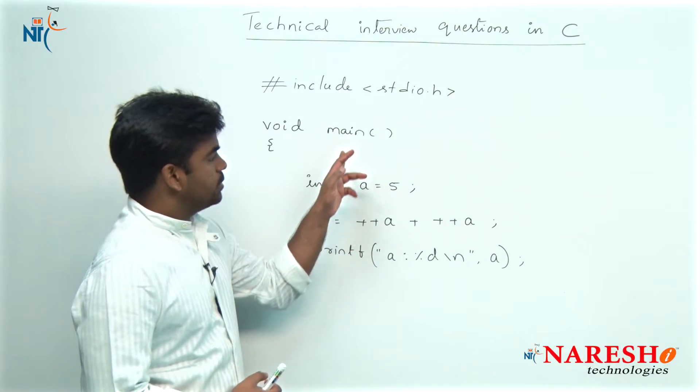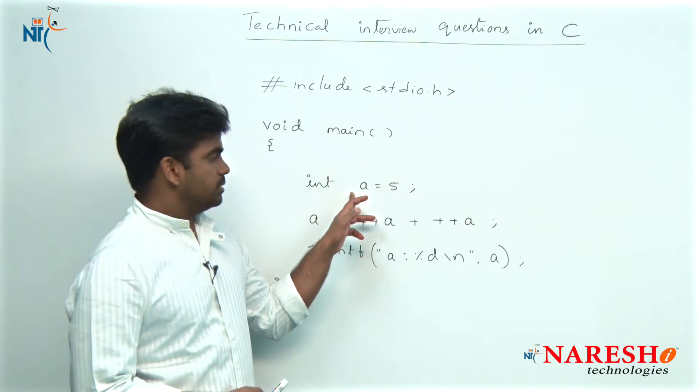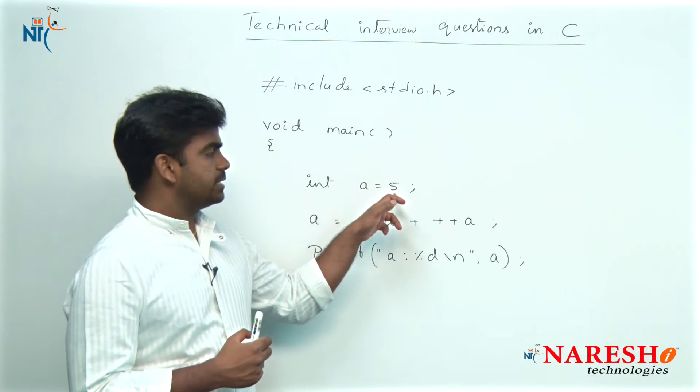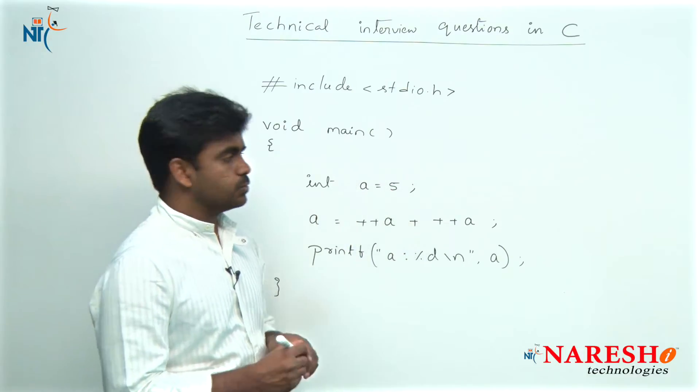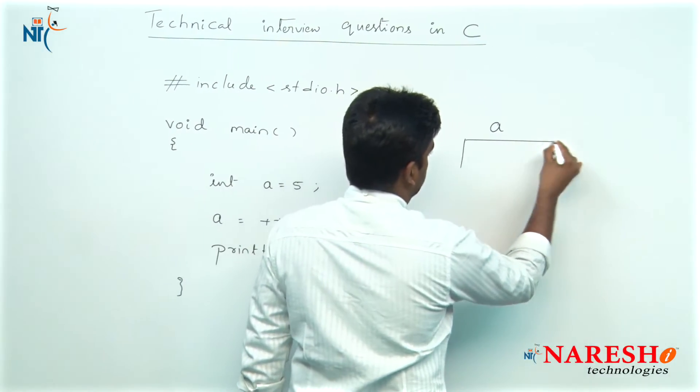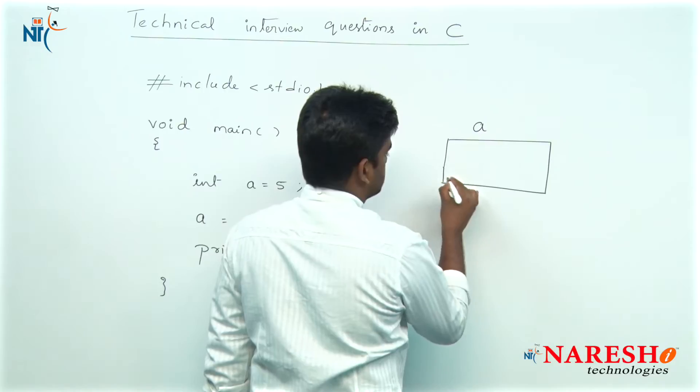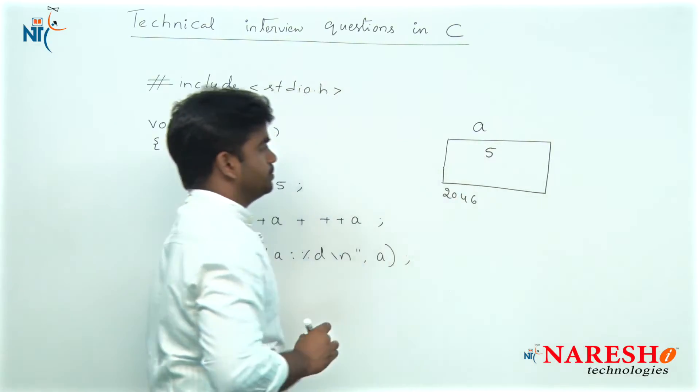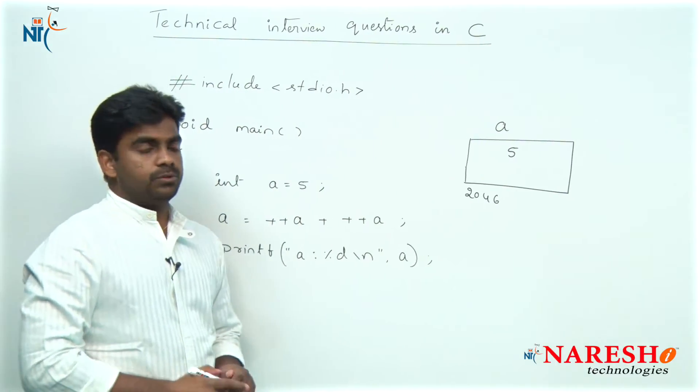The execution starts from the main function. First, a value gets memory allocation and here it is a direct initialization with a value 5. So a gets memory allocation at some location, at some location's address, and initial value is 5.